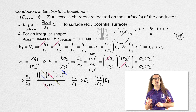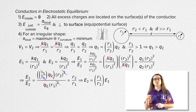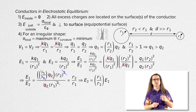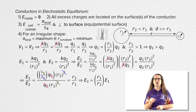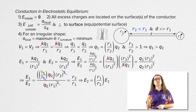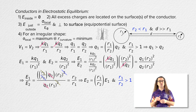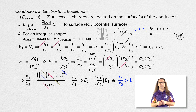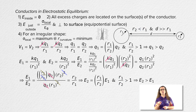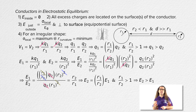That means electric field 2 equals radius 1 over radius 2 times electric field 1. And again, because radius 2 is smaller than radius 1, radius 1 over radius 2 is greater than 1. That means the electric field at the surface of sphere 2 is more than the electric field at the surface of sphere 1.